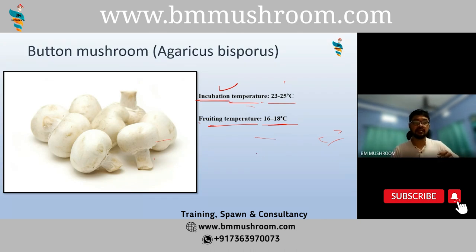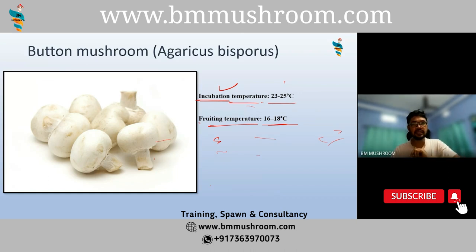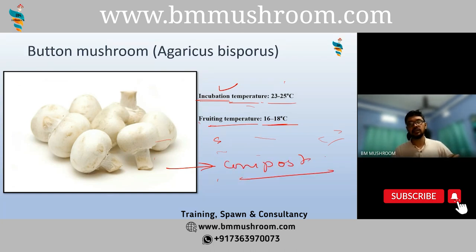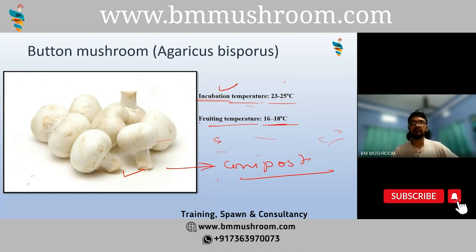The ideal fruiting temperature for button mushroom is 16 to 18 degrees Celsius. I won't discuss the substrate in detail because after today's webinar, everyone will receive a free eBook containing all essential data on substrate combinations. The button mushrooms don't grow on any natural substrate — they actually need compost: a fermented mix of straw, water, chicken manure or urea, and certain fertilizers. Only on that fermented material will this button mushroom grow. They are not quite easy to grow, but once you master it, you can grow easily.